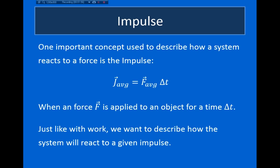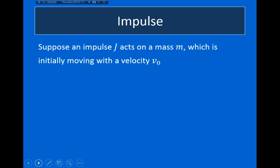To do this, we introduce the impulse. The average impulse is defined as being equal to the average force that is exerted over some time delta T, times the time delta T. The average impulse — and technically this is a vector — is equal to the average force that is exerted times the amount of time over which that force is exerted.